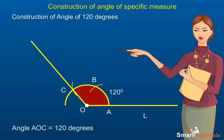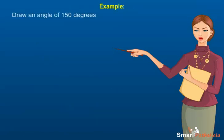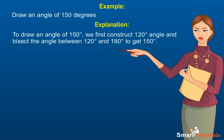Example: Draw an angle of 150 degrees. To draw an angle of 150 degrees, we first construct a 120-degree angle and then bisect the angle between 120 and 180 degrees to get 150 degrees.